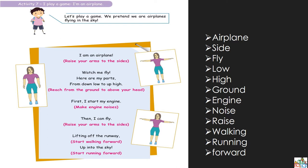We are going to be an airplane together. We are going to read and you're going to do the actions. À la maison vous allez faire les actions et on va lire. On va lire ensemble et on va voir quelques mots. Vous pouvez voir qu'à côté j'écris quelques mots comme airplane, sight, flight.